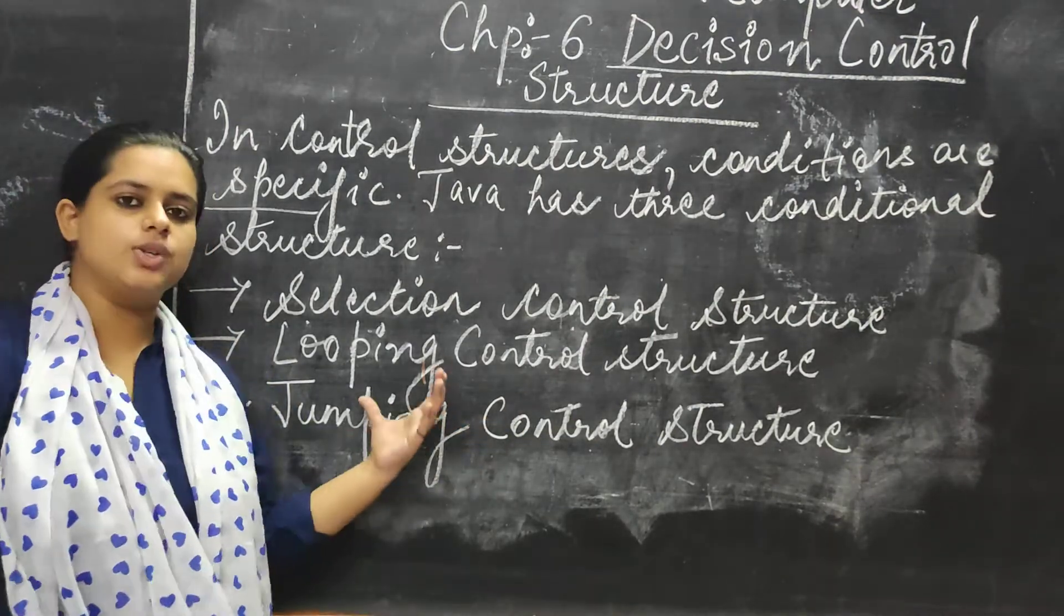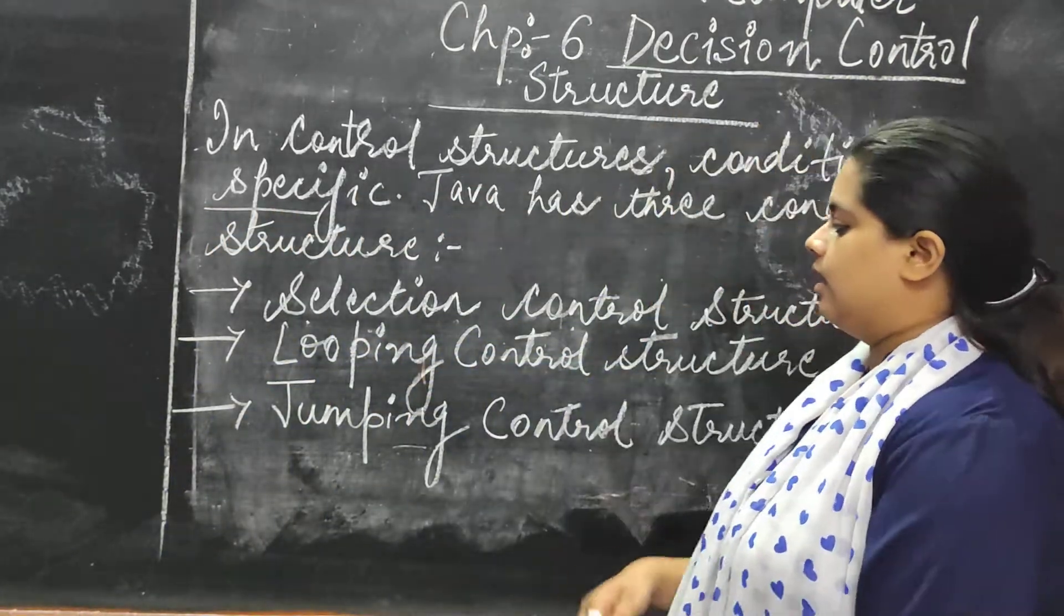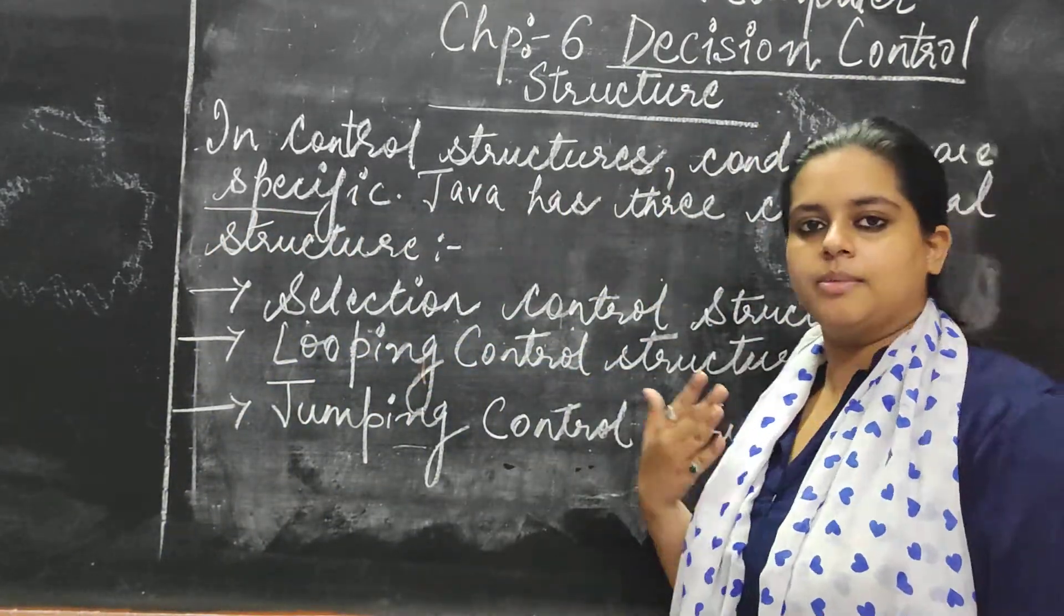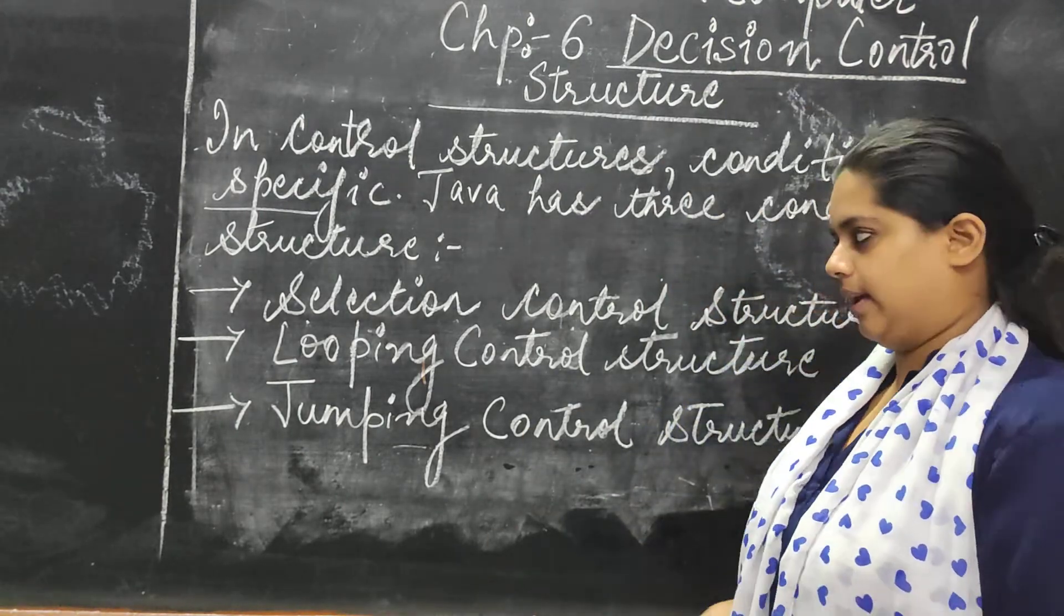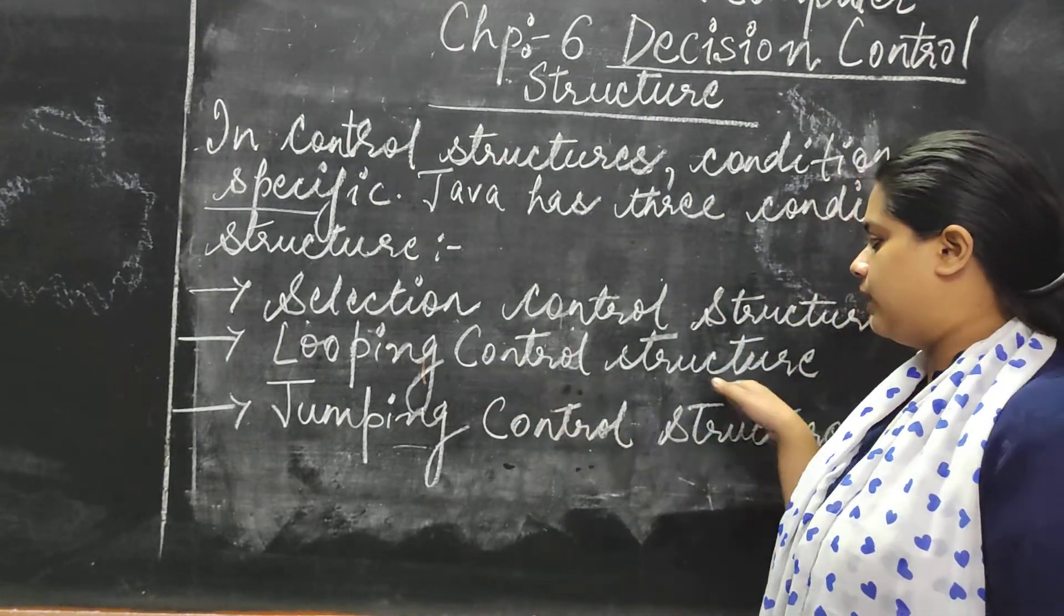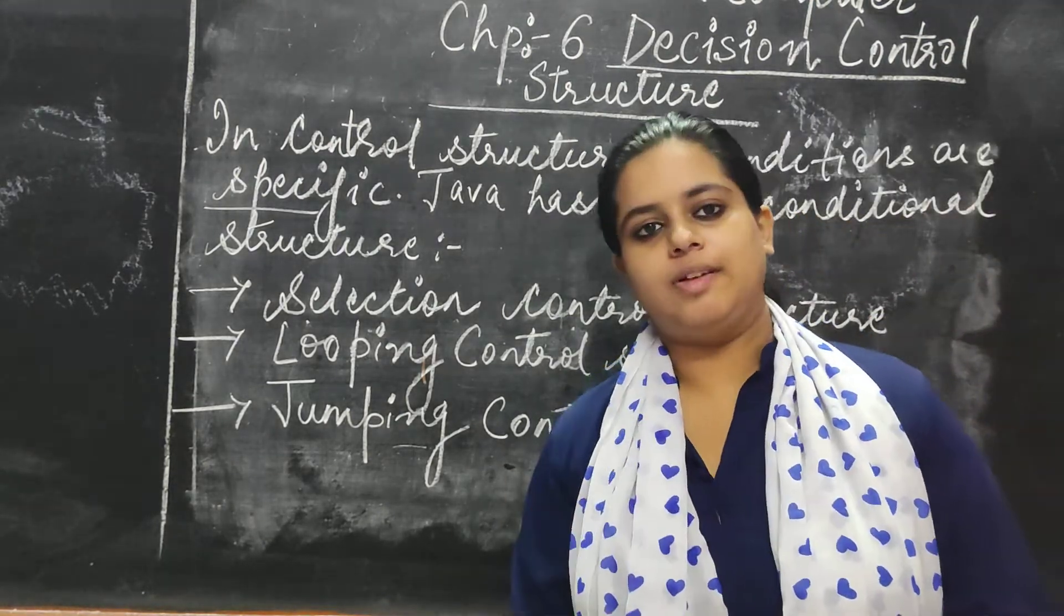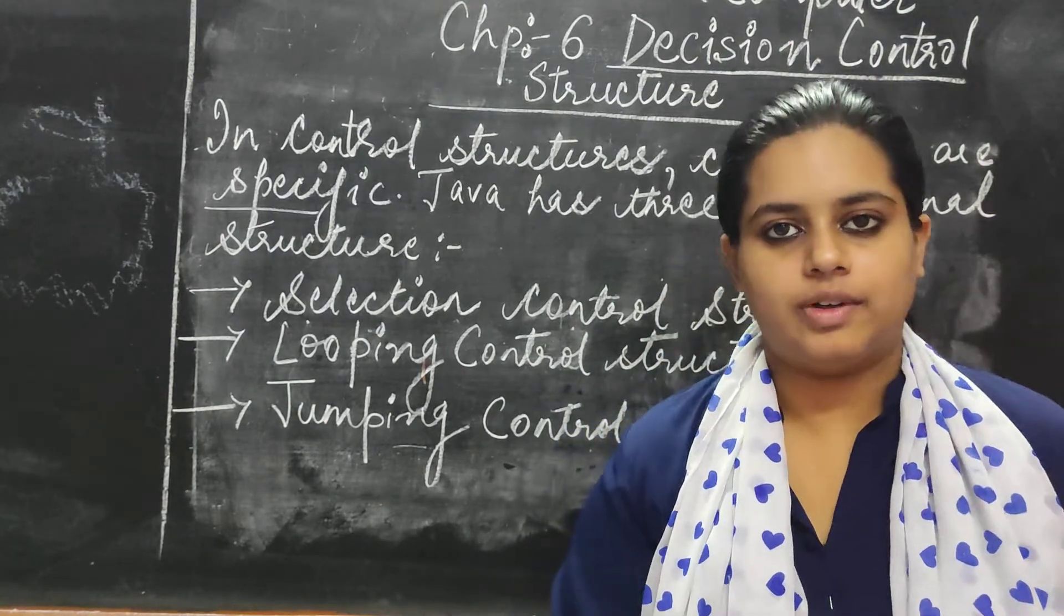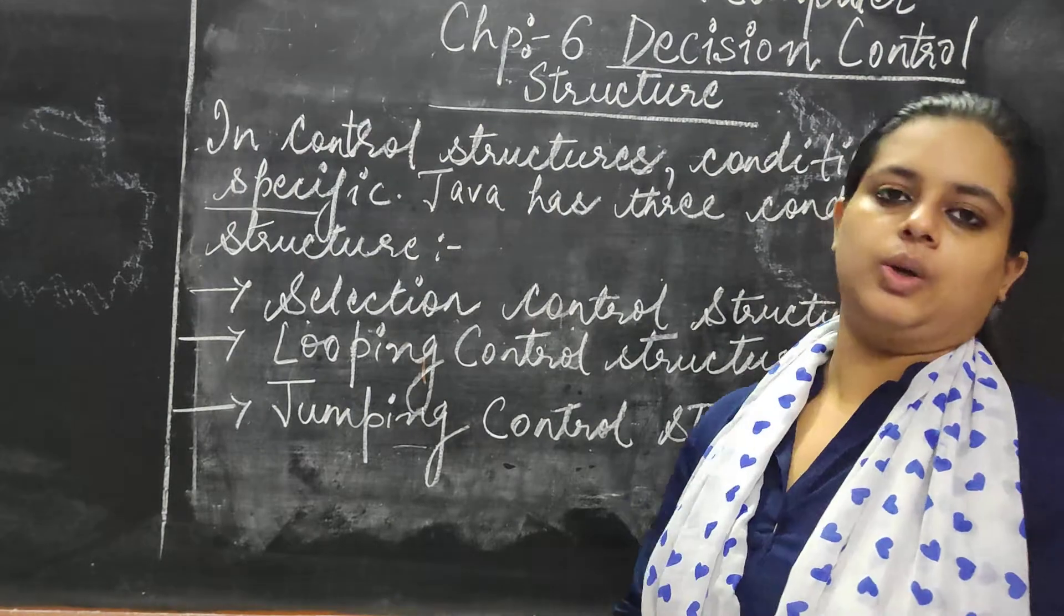Jumping control structure is also known as your switch case or the break statement. Second one, looping control structure. Third one is your selection control structure.